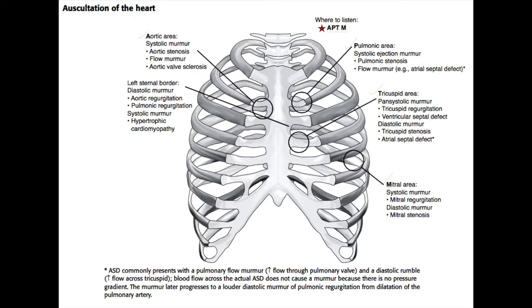The pulmonic area is just across the sternum on the left second intercostal space. The pulmonic area is where you listen for systolic ejection murmurs of pulmonic stenosis as well as flow murmurs, for example in patients with an atrial septal defect. Atrial septal defects commonly present with a pulmonary flow murmur because of increased flow through the pulmonic valve due to left to right shunting.